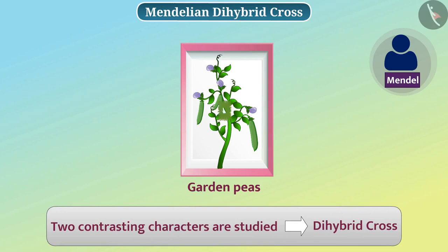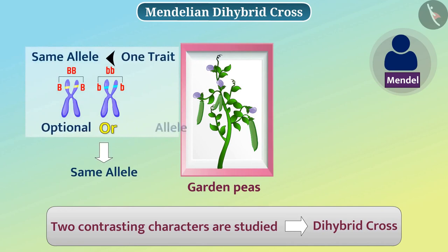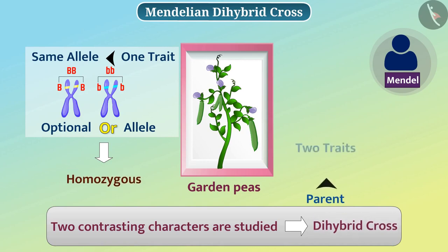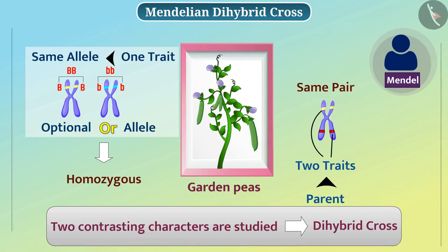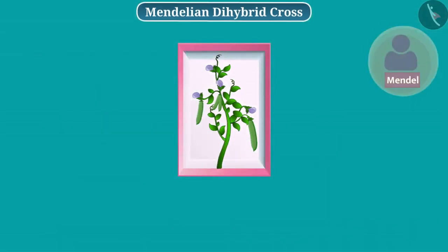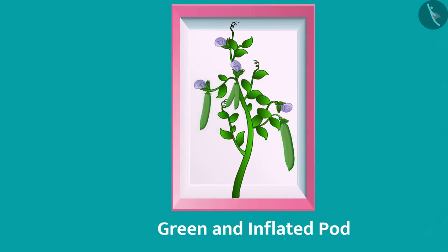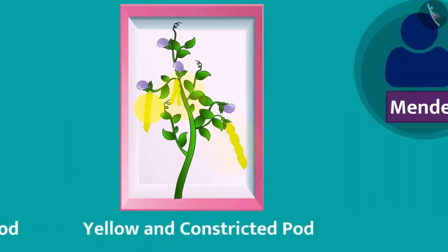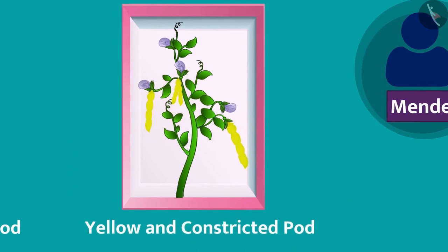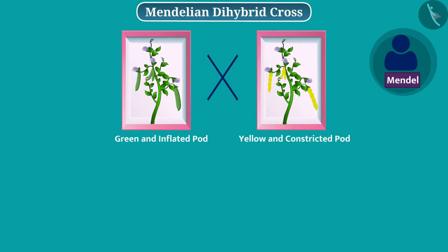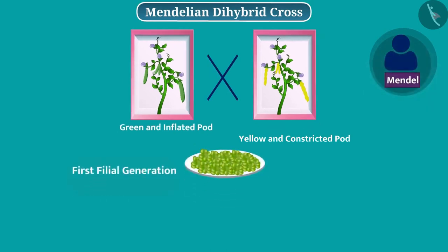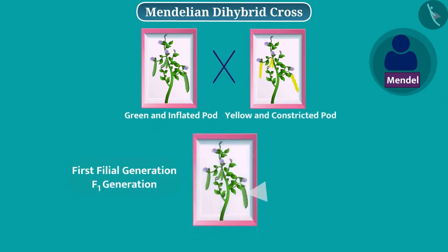Organisms that have the same allele for a trait are homozygous for that trait. Parents taking part in a dihybrid cross are homozygous for two traits. In the experiment, Mendel selected two homozygous plants. In one, the pods were green in colour and inflated. In the second plant, pods were yellow in colour and constricted. By crossing these, Mendel obtained seeds and grew the first filial generation — the F1 generation. The pods of all plants of this generation were green and inflated.